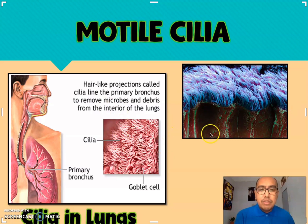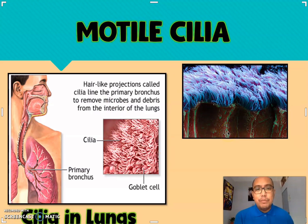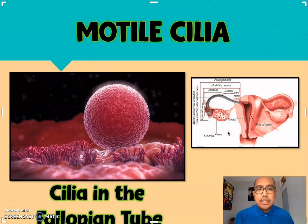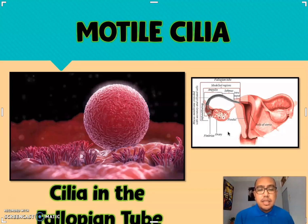This is the image of the motile cilia under an electron microscope. Another example of motile cilia can be found in the fallopian tube of females — these cilia help the egg cells travel to the uterus during the menstrual cycle.